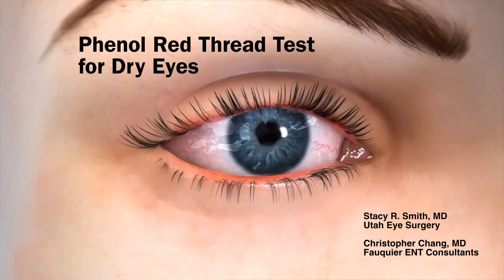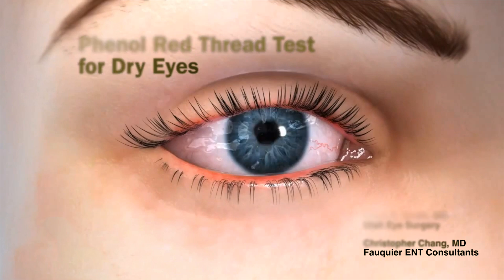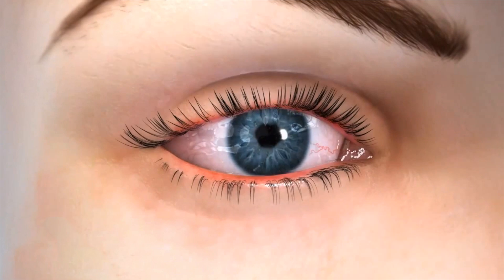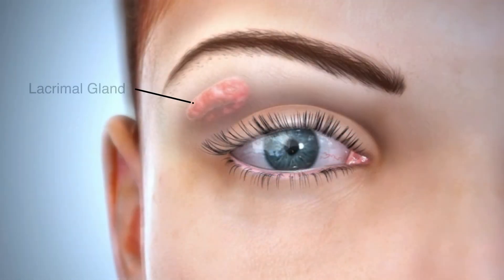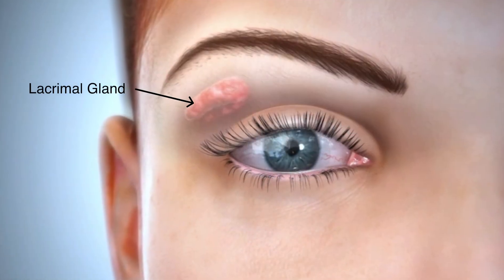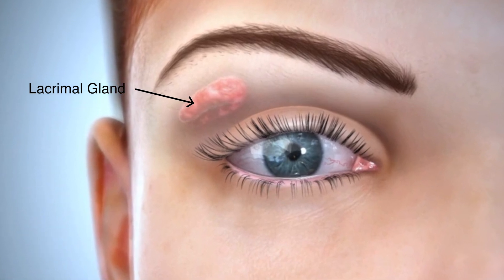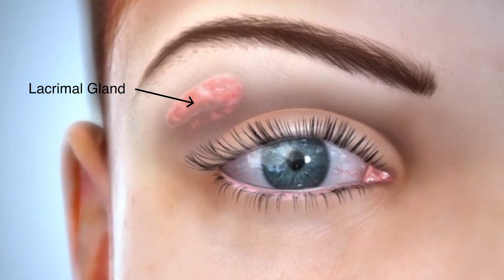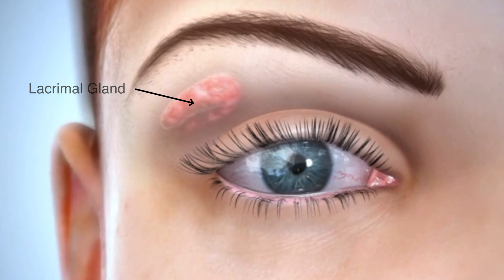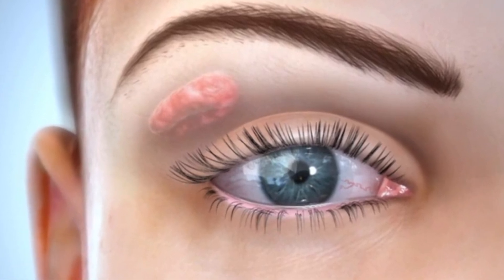Dry eyes are a very common complaint when tear production is not able to provide adequate eye lubrication. The lacrimal gland, located above the eye, produces the aqueous layer of the tear film by continuously releasing fluid that coats the eye's surface — what most people would consider the eye's natural moisture.